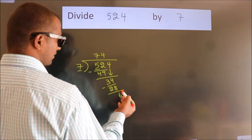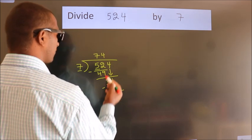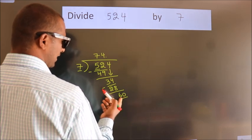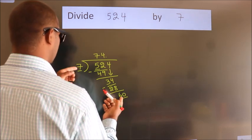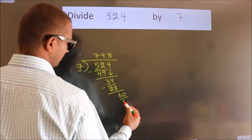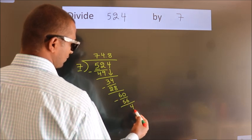After this, no more numbers to bring down. So what we do is put a dot and take 0. So, 60. A number close to 60 in the 7 table is 7 eights, 56. Now we subtract and get 4.